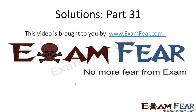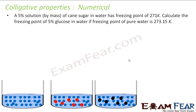Hello friends, this video on solutions part 31 is brought to you by exampa.com. The question says the 5% solution by mass of cane sugar in water has a freezing point of 271 Kelvin. Calculate the freezing point of 5% glucose in water if the freezing point of pure water is 273 Kelvin.